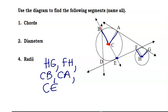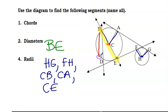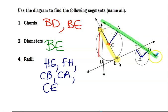The diameters are also very specific — they have to go from both edges and go through the center of the circle. There's actually only one that does that and that is BE. So BE is the only diameter in this example. Now for chords, the only rule is that it has to touch two sides of the circle. BD is one of them, and BE is another chord. These outside things are things you'll learn later in this unit.